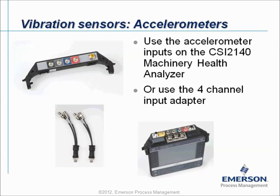To connect the signals you can use two different methods. First, you can use the axle inputs — those two inputs here are the axle inputs. Or you can use a splitter to go to four channels, or you can attach the four channel input adapter. With the four channel input adapter, one side deals with acceleration signals and the other side deals with displacement or fault signals. If you are using accelerometers, make sure to connect to axle A, B, C, and D.